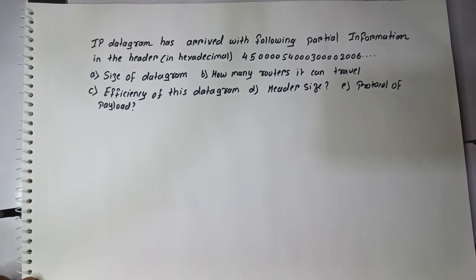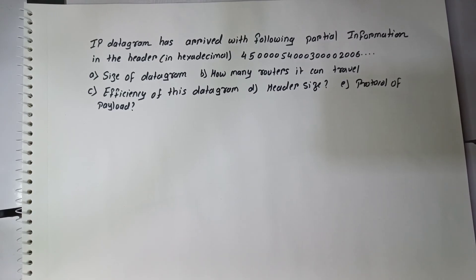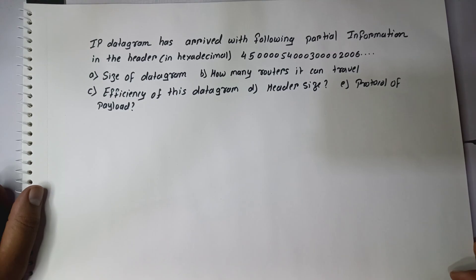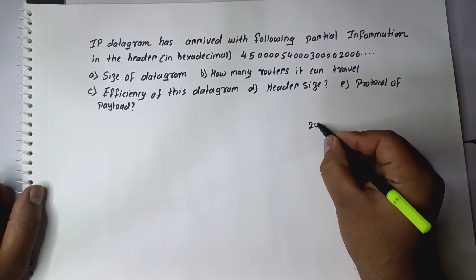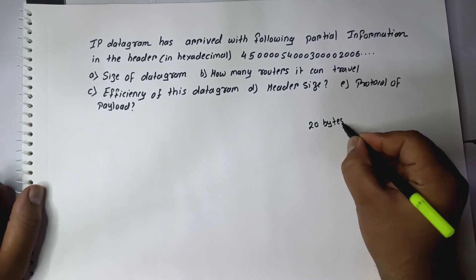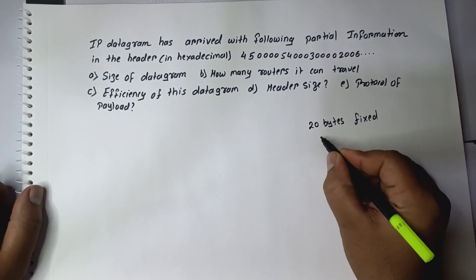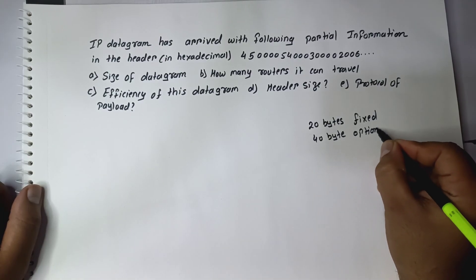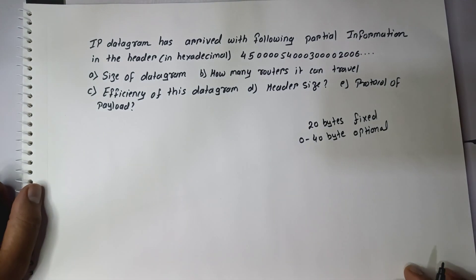Hello everyone. In this video we are going to solve a numerical based on the IPv4 datagram. In this question they have provided partial data in hexadecimal form. To solve such a question it is necessary to draw the IPv4 datagram header. The IPv4 datagram consists of 20 bytes of fixed header and up to 40 bytes of optional data.